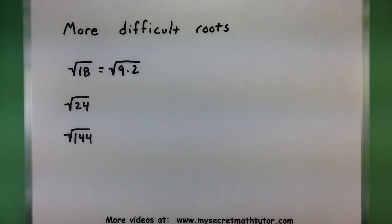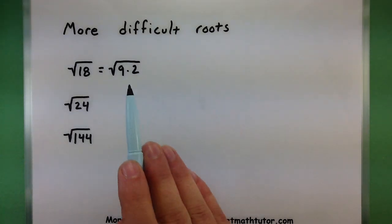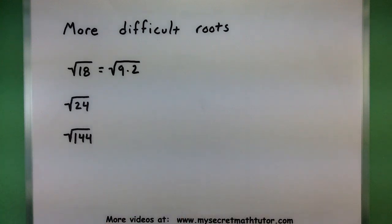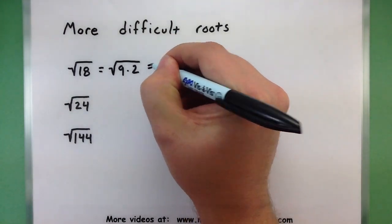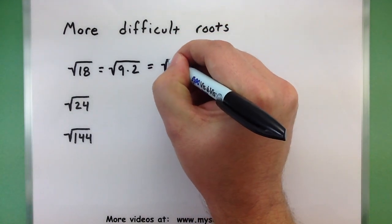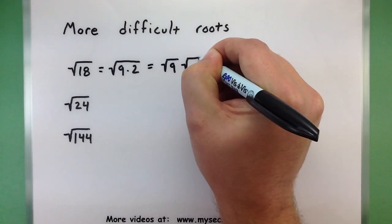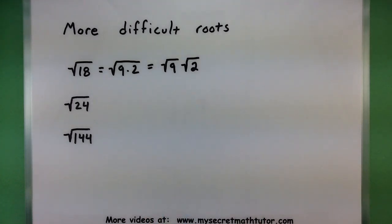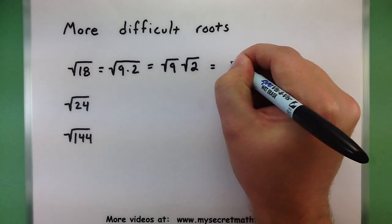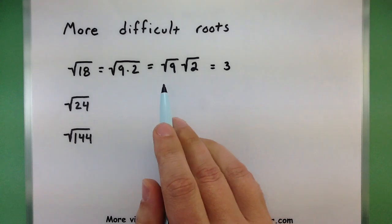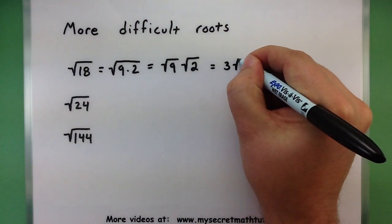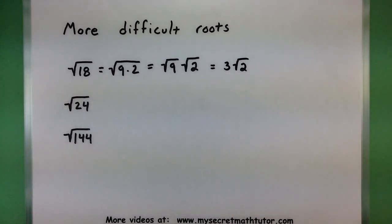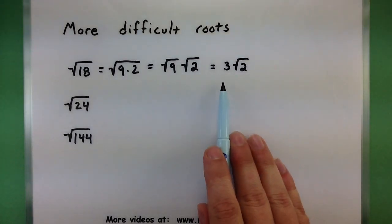Now, those are not the same, so I'm not done with this root just yet. But notice this 9 was actually in some of our earlier examples. That is something that we can take the square root of. And the neat part about square roots is we can split them up over multiplication. So I can think of this as two different roots. I'm looking at the square root of 9 multiplied by the square root of 2. Now this guy, we can do that guy just fine. The square root of 9 is 3 because 3 times 3 would give us that 9.